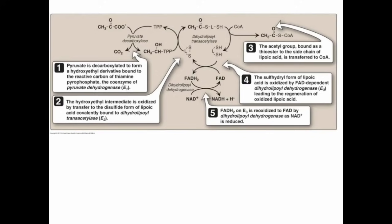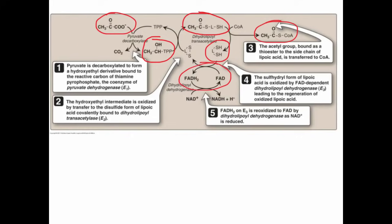The first enzyme catalyzes the decarboxylation of pyruvate, in which a hydroxyethyl group becomes bound to thiamine pyrophosphate, which is covalently attached to the first enzyme. This hydroxyethyl group gets transferred to coenzyme A, and the product is acetyl-CoA. The hydrogens extracted in this reaction are transferred to lipoic acid, which is part of the second enzyme. The hydrogens are then passed from lipoic acid to FAD to make FADH2, and then on to NAD to make NADH. The final products are carbon dioxide, reduced NADH, and acetyl-CoA.